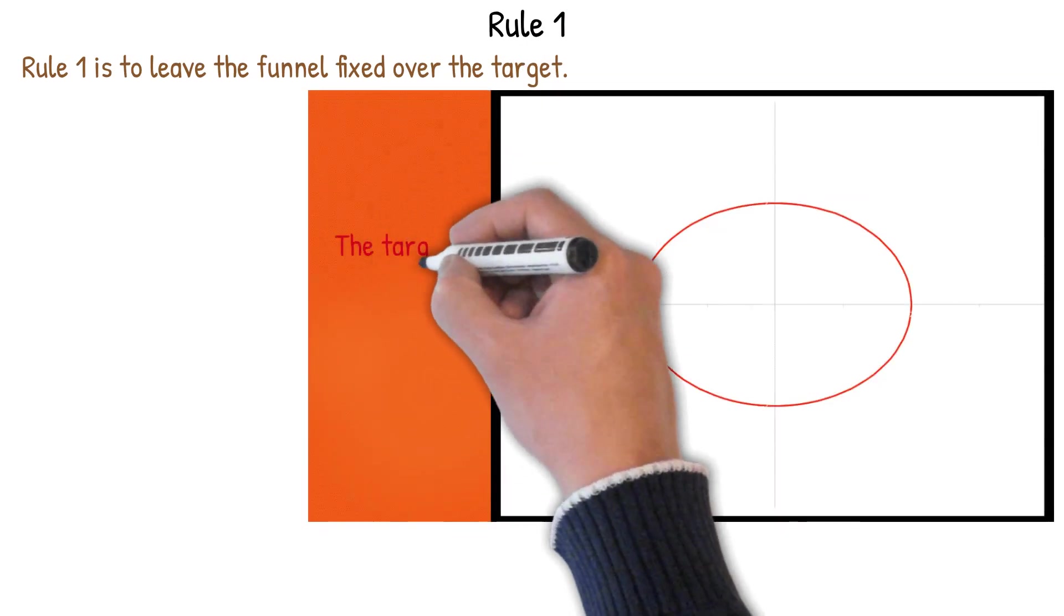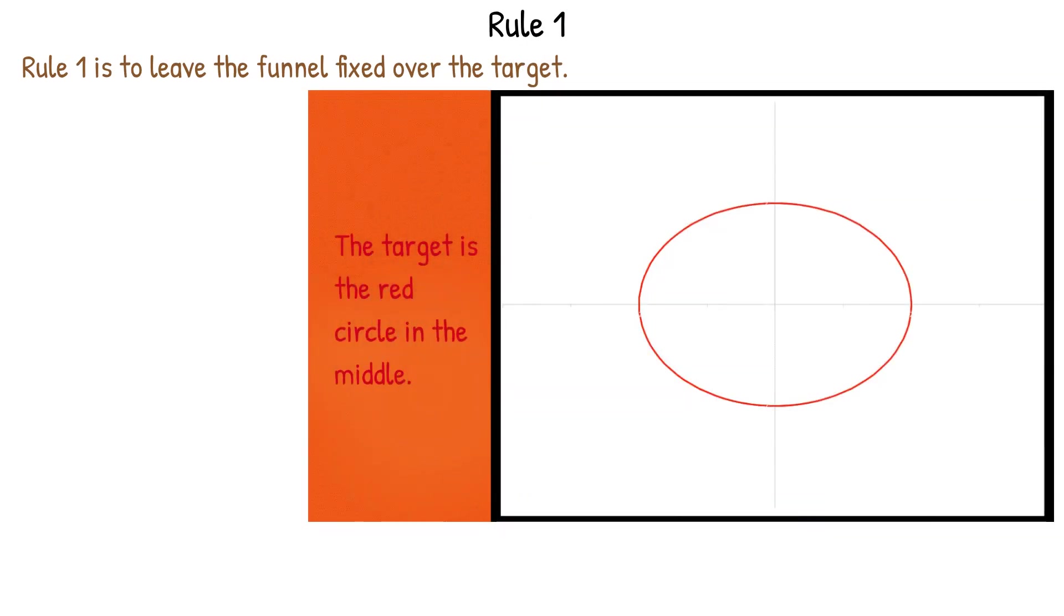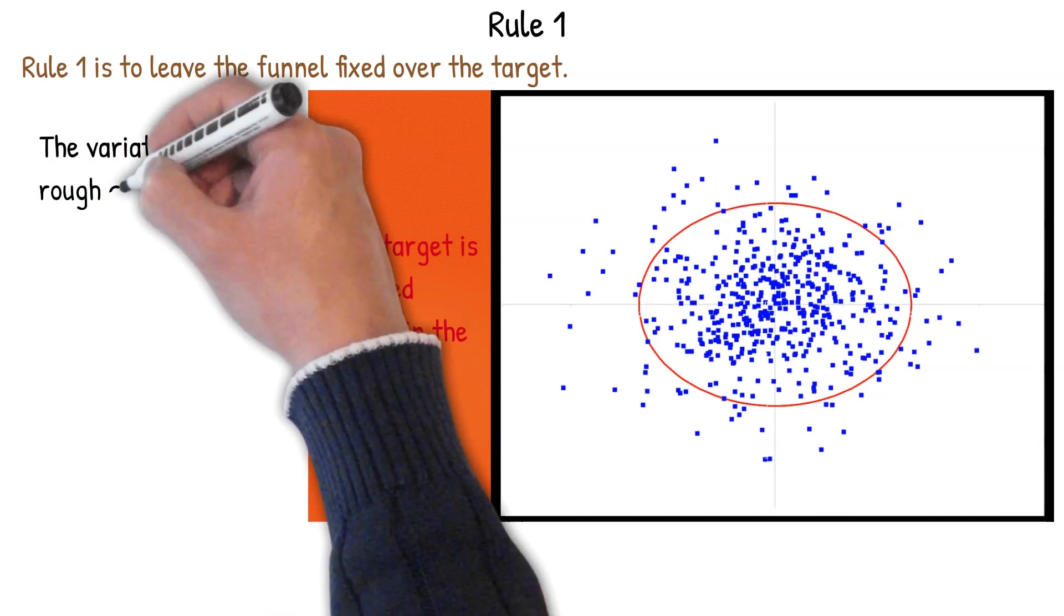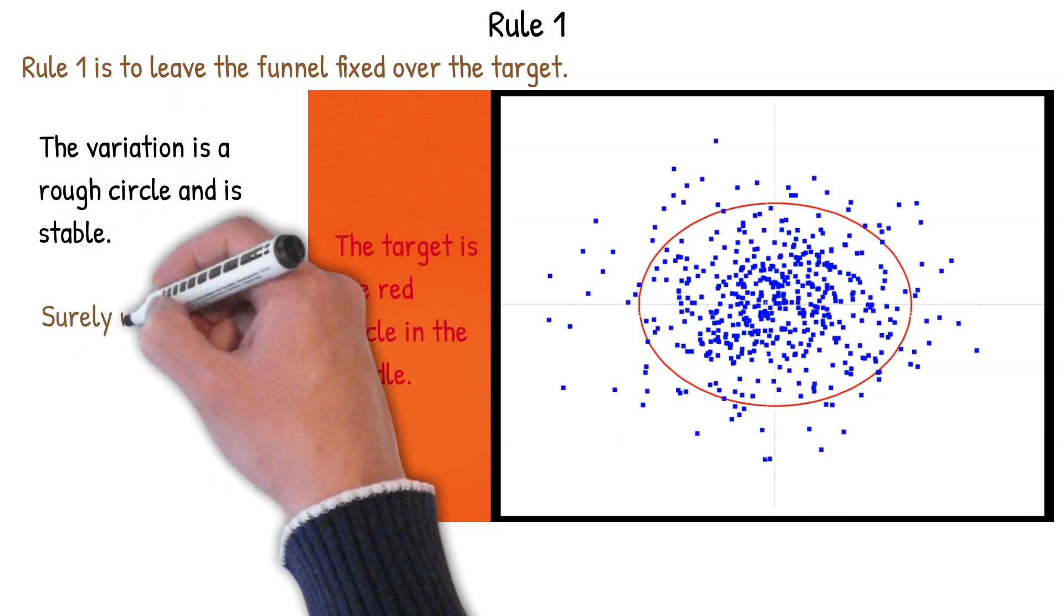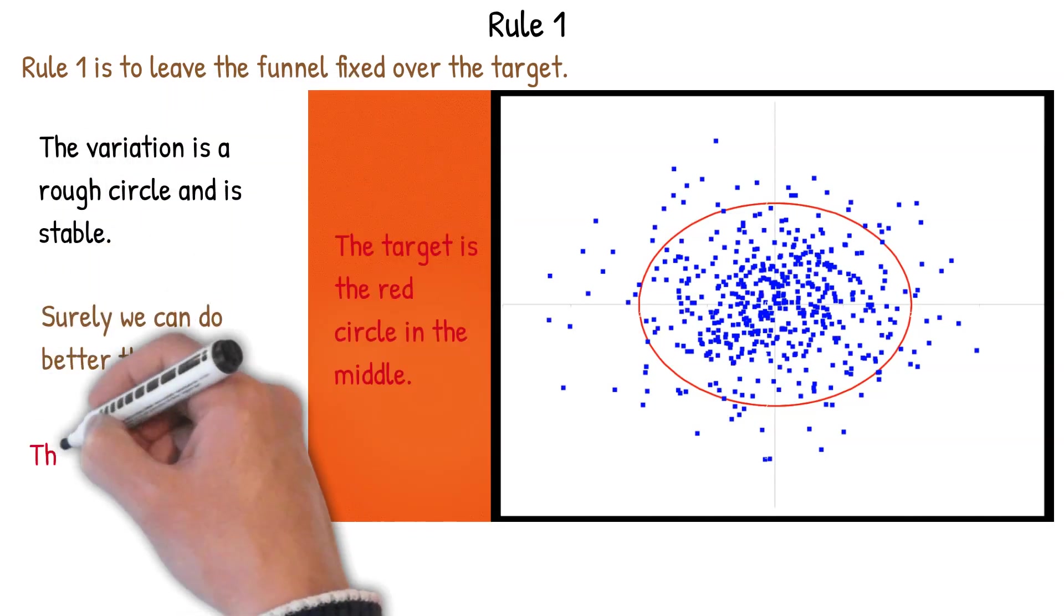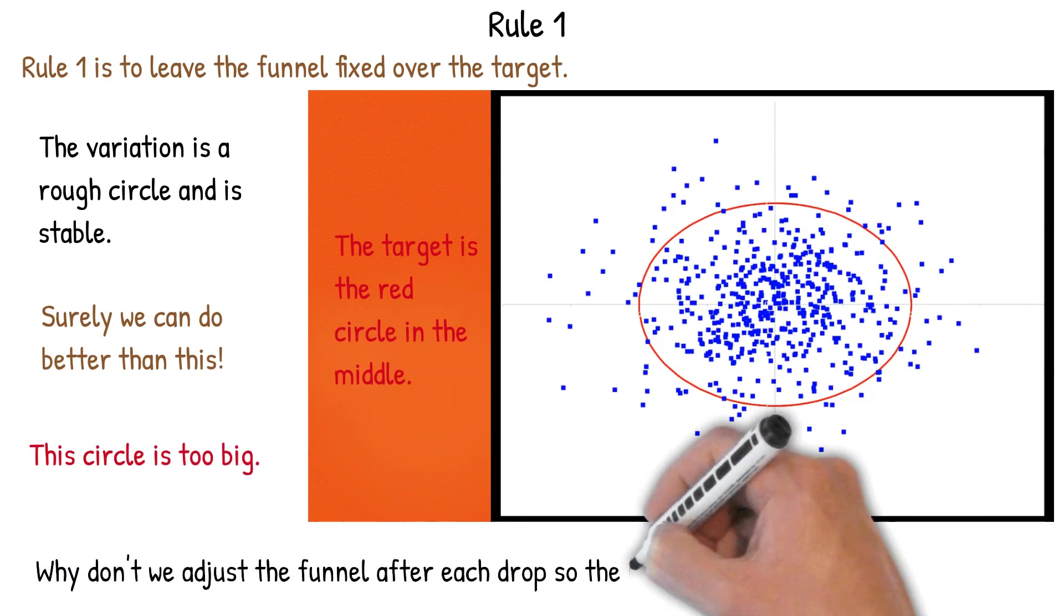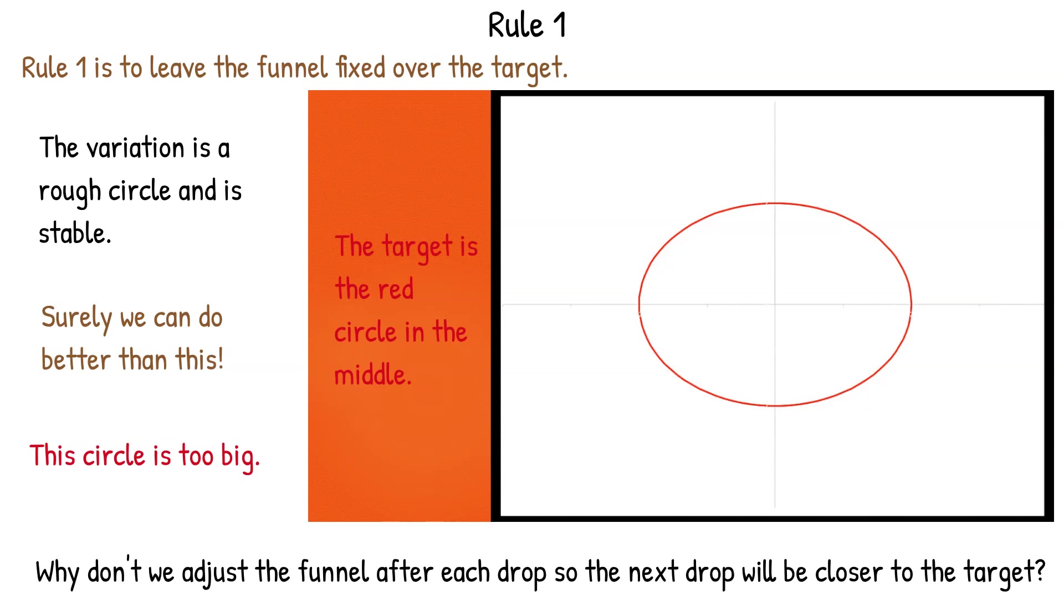So rule number one is to leave the funnel fixed over the target. Target's the red circle, we have an Excel simulation that simulates dropping the marble multiple times and you can see this variation is a rough circle and it's stable. But surely we can do better than this, that circle's too big. So why don't we adjust the funnel after each drop so we're going to get closer to that target and that brings us to rule two, the one we use most when tampering with the process.